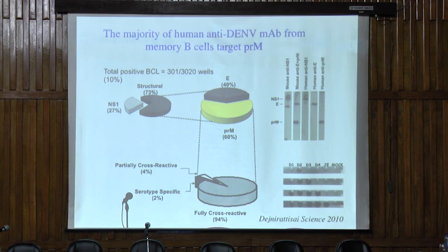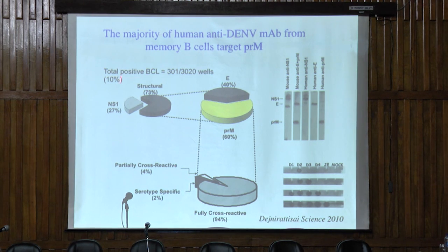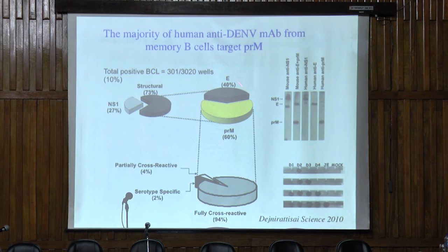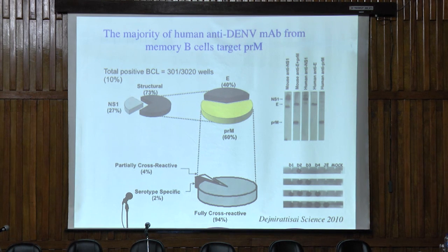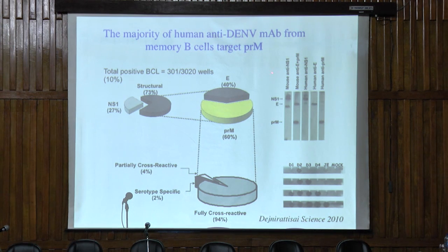When we did this experiment, we made around 300 monoclonal antibodies against dengue. We included antibodies against the NS1 protein, which took up about a quarter of the population. But when we looked at antibodies to the structural antigens — pre-M and E — we were quite surprised, because we were particularly interested in generating antibodies against the envelope protein, which we felt were most likely to be the neutralizing ones.